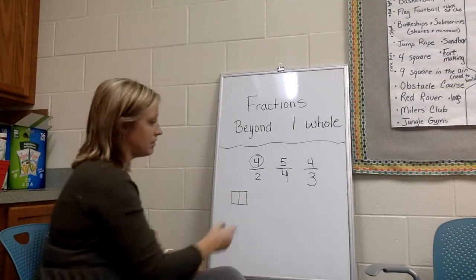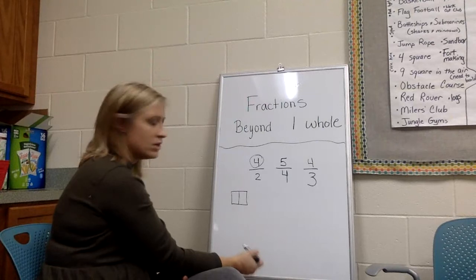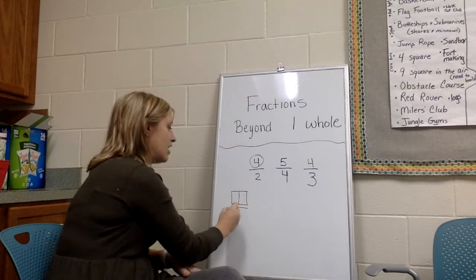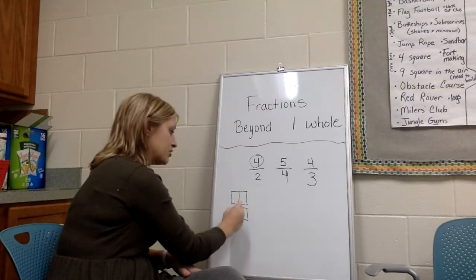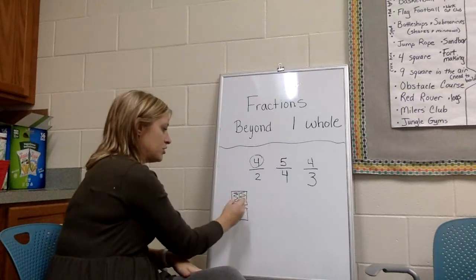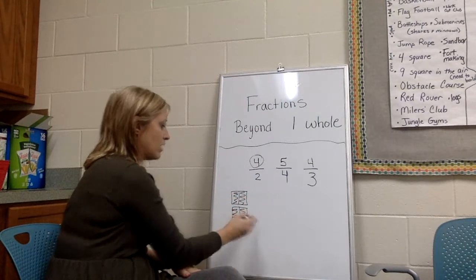I should see a picture like that if I'm talking about halves. But how do I get four halves? Well, I would need another picture with halves and I would color in one, two, three, four. That would be four halves.